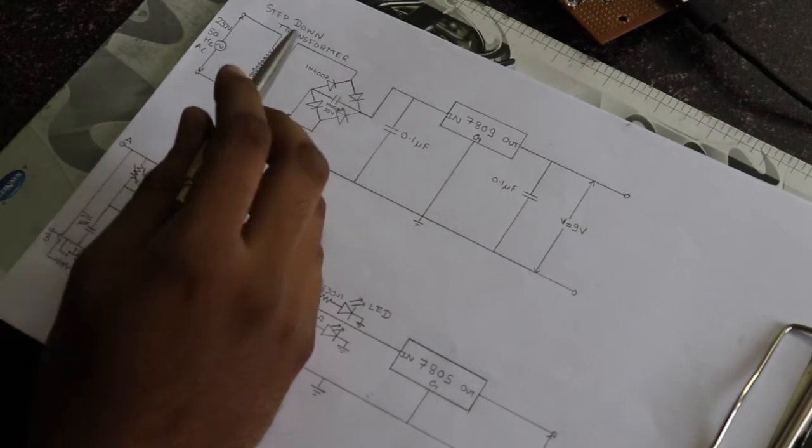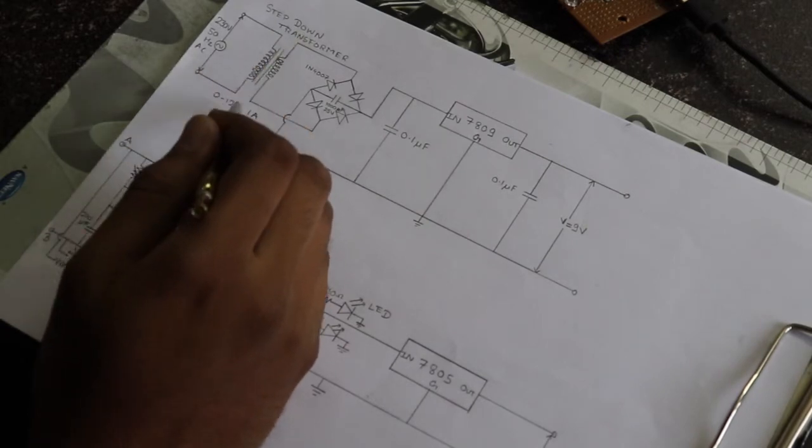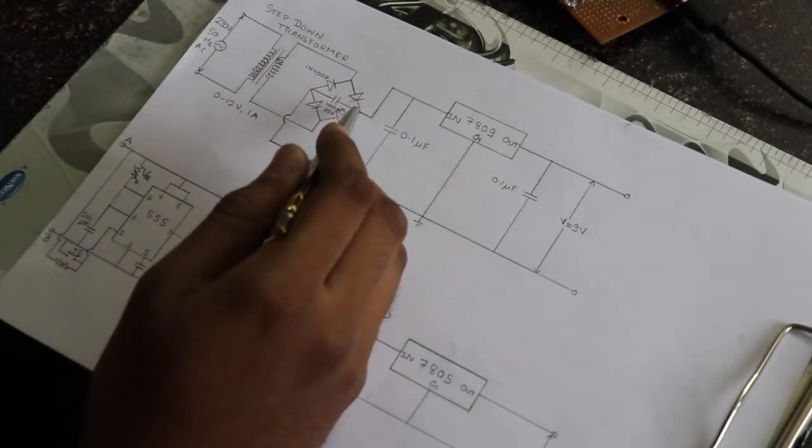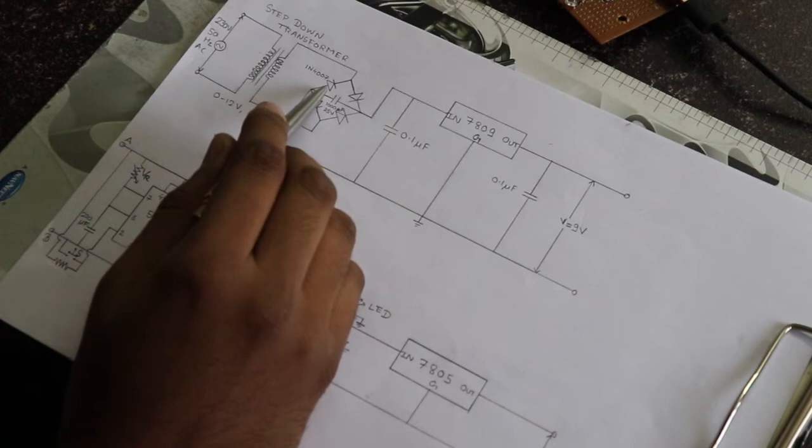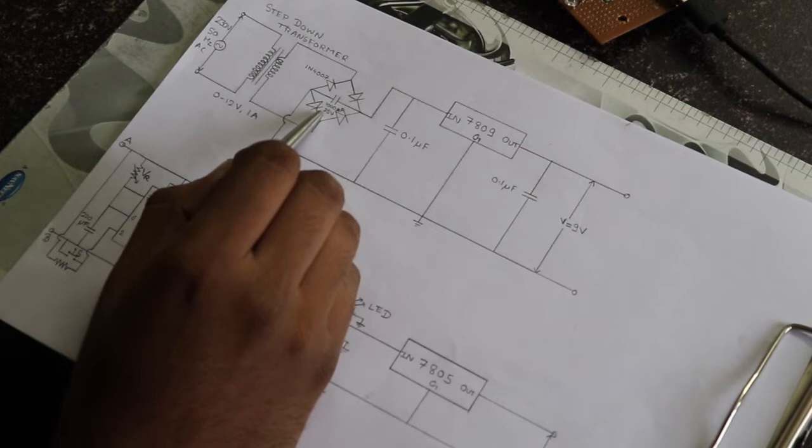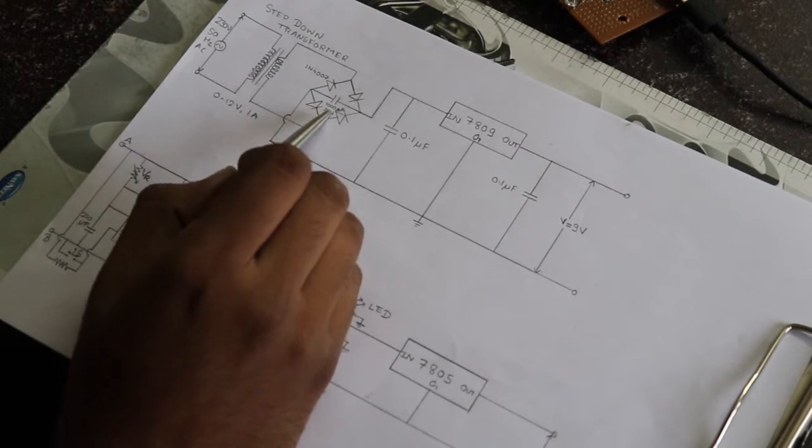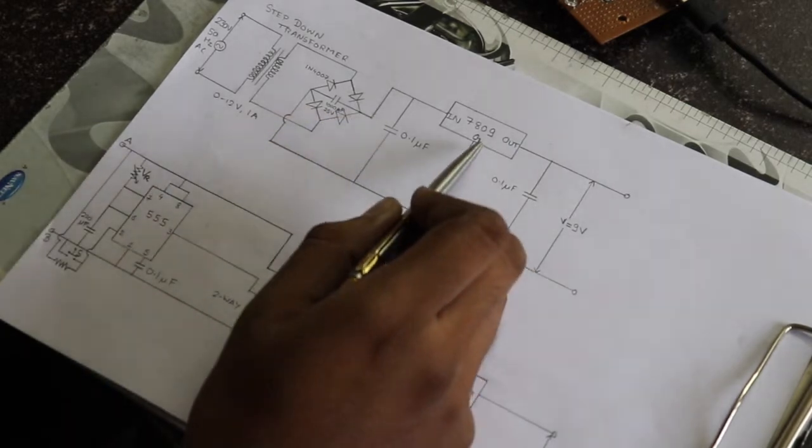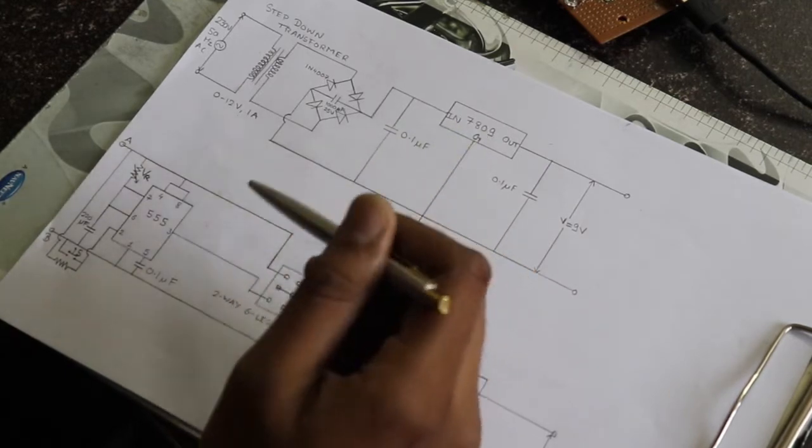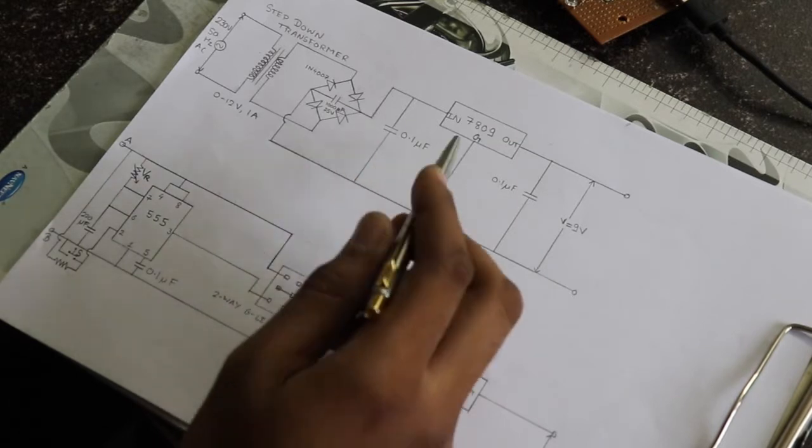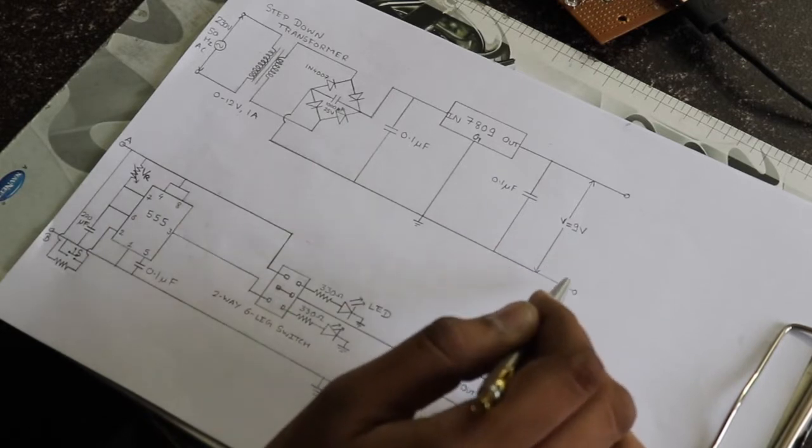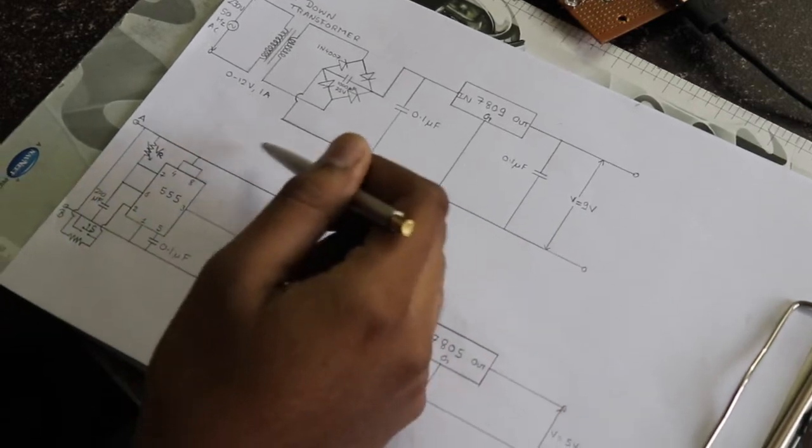Here we are giving AC supply to a step down transformer operating 12 volts 1 ampere. After that it is going to a bridge rectifier for rectification purpose. Here the diode used is 1N4007. After that it is going to a filter, 1000 microfarad 25 volts. After which it enters a voltage regulator 7809. 7809 is used as IC 555 requires 9 volts input. So after this circuit 9 volts output is provided to the 555 IC.